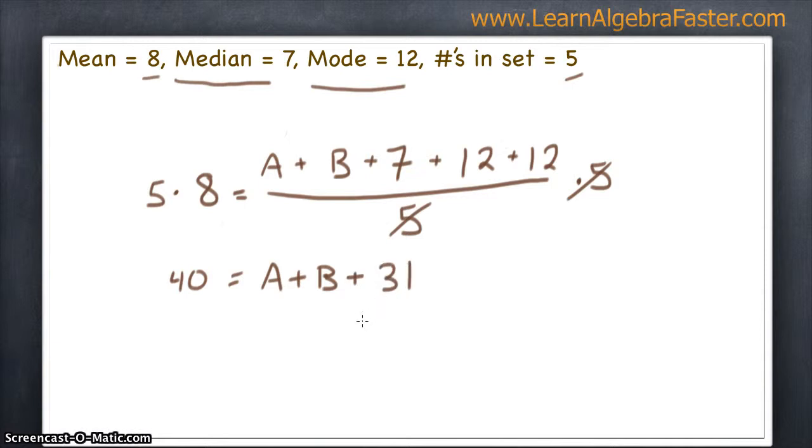And now, to get A and B by themselves, we need to do another inverse operation. We'll subtract 31 from both sides. And 40 minus 31 gives us nine. So, this is good, because we need two numbers, A and B, that are both less than seven, and they add up to come up with nine. So, we can do this a couple different ways.